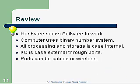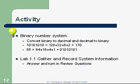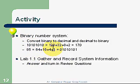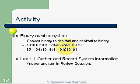Activities: we're going to do a binary numbering system activity, converting binary to decimal and decimal back to binary. Here's an example: 10101010 — that's 8 bits, or 1 byte. Looking at the place values from left to right: 128, 64, 32, 16, 8, 4, 2, 1. If we add up the values where a 1 is set — 128, 32, 8, and 2 — we come up with 170.